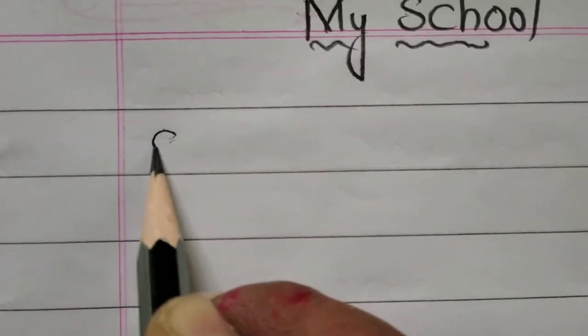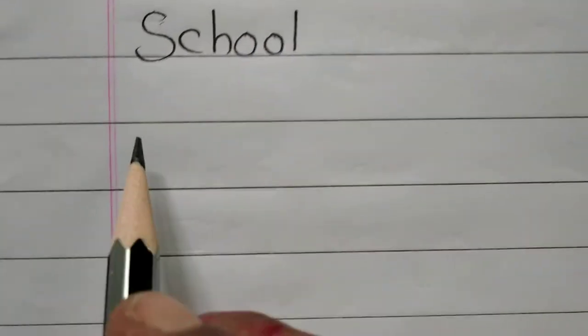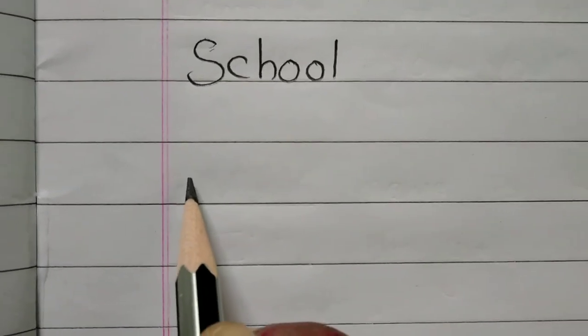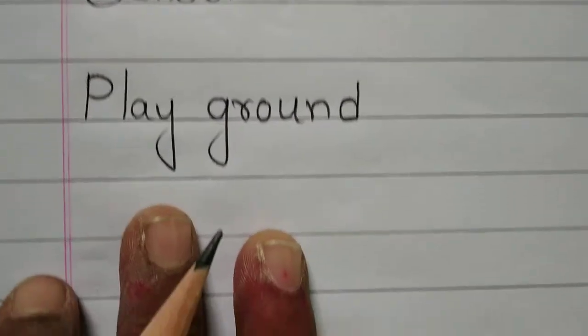First one, school. S-C-H-O-O-L, school. And leave one line and write here, playground. P-L-A-Y, play. G-R-O-U-N-D, playground.